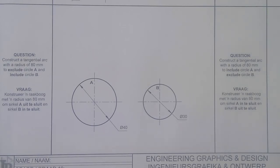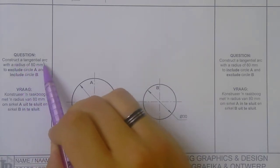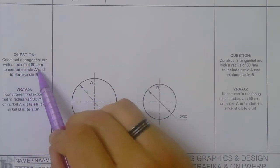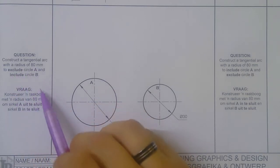Okay, so now we have the question: construct a tangential arc with the radius of 80 to exclude circle A and include circle B.